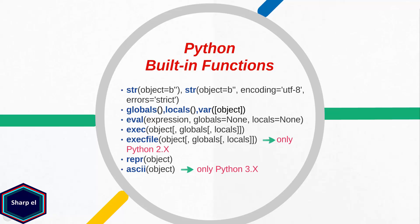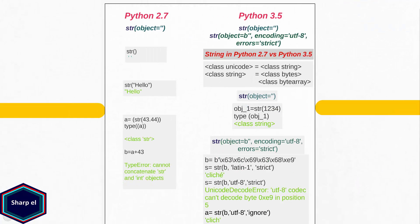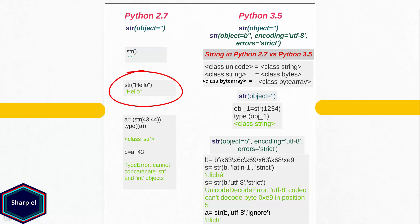Let's start first with the string function. String function is one of the simplest functions in Python. It is used to convert any other object like integer, float, date, time etc. to a string object. In Python 2.7 the string function takes only one argument and it is optional. So if we call string function without any object, it returns an empty string. If we call string function with an object which is also a string, then the output is also a string.